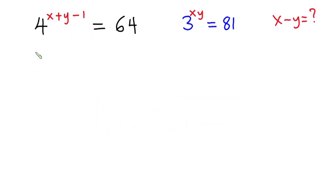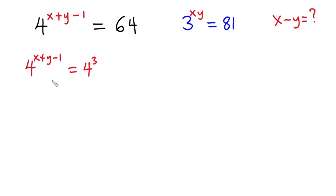Beginning from the first equation, we have 4 to the power x plus y minus 1 is equal to 64, which is the same as 4 to the power 3. Now you can see that we have the same base, so we can equate the exponents: x plus y minus 1 is equal to 3.